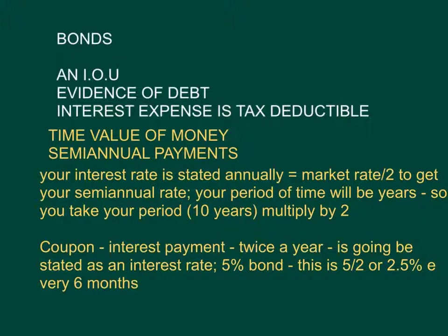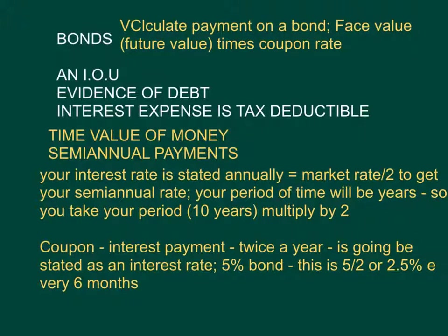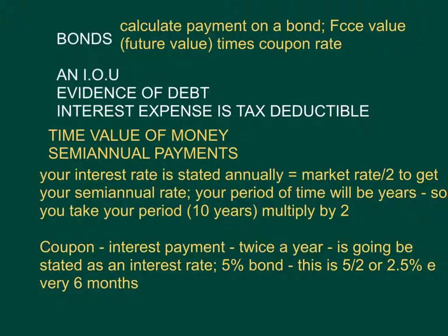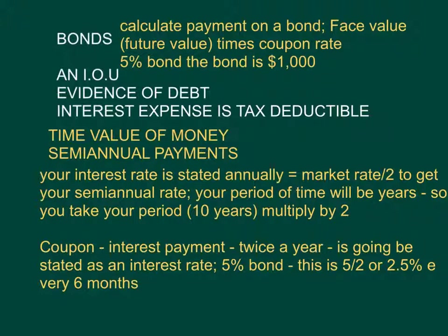To figure out that coupon interest payment: to figure out your payment, you're going to take the face value — which is also the future value, where you're going to be paid back in the future — times the coupon rate, and if it's semi-annual, divide by 2. If it's not semi-annual, just leave it. So let's say you have that 5% bond and the bond is $1,000 — that's the future value or face value. You do $1,000 times 5%, which is $50 per year, or $25 semi-annually.